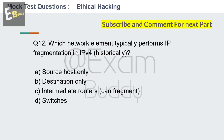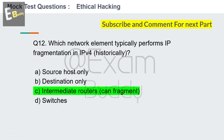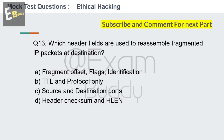Question 12: Which network element typically performs IP fragmentation in IPv4 historically? Options: source host only, destination only, intermediate routers can fragment, switches. Your time starts now. The answer is C: intermediate routers can fragment. Now question number 13.